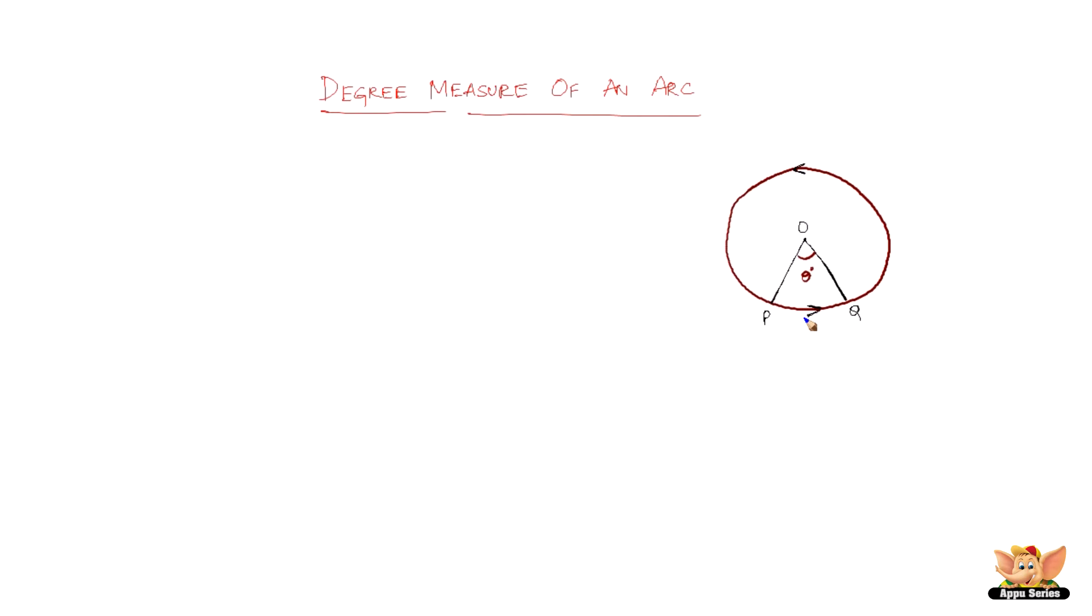So now, what is degree measure of an arc? The degree measure of a minor arc. Let us go from minor arc and then major arc. So here the minor arc would be PQ. So this would be the minor arc, and then the major arc would be QP.